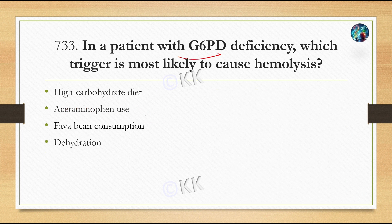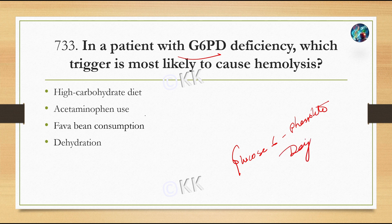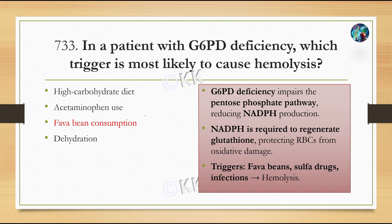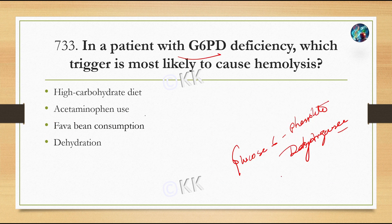In a patient with G6PD deficiency, which trigger is most likely to cause hemolysis? G6PD stands for glucose-6-phosphate dehydrogenase. Options are: Option A, high carbohydrate diet; Option B, acetaminophen use; Option C, fava bean consumption; Option D, dehydration. The correct option is Option C, fava bean consumption.